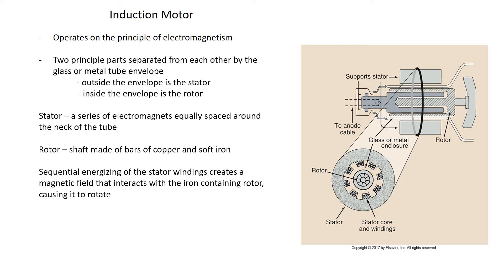The anode turns through sequential energizing — one electromagnet turns on then off, the next turns on then off, and so forth around the tube. The sequential energizing of the stator windings creates a magnetic field that interacts with the iron-containing rotor, causing it to rotate. The electricity can energize these electromagnets very quickly, rapidly spinning the anode.